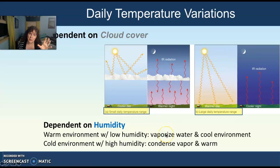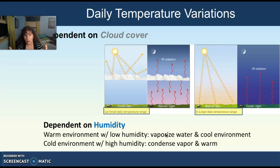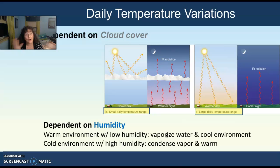Humidity also has a real impact on daily variation of temperature. If you have a warm environment with low humidity, it is going to try to vaporize any available water, and as it vaporizes that water, it will cool the environment — remember the latent heat. Conversely, if you have a cold environment that's high humidity, that environment will tend to condense the water, and in condensing the water, it releases heat. So some of your daily temperature variations can be dependent on humidity as well.